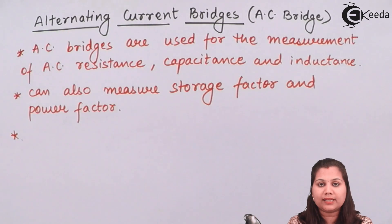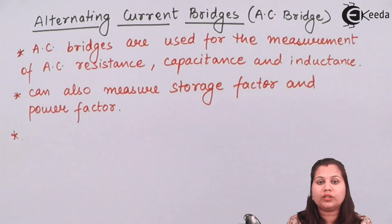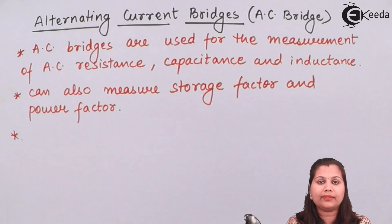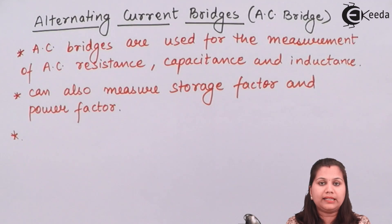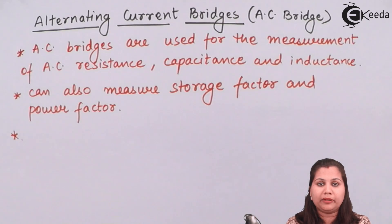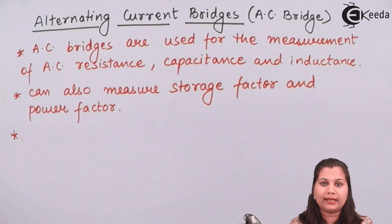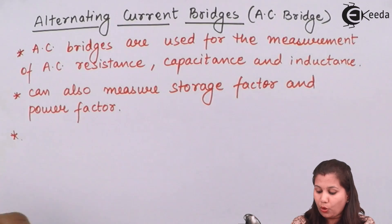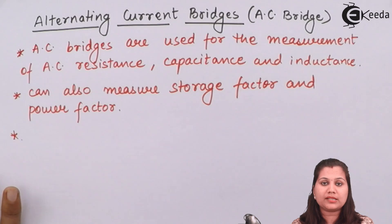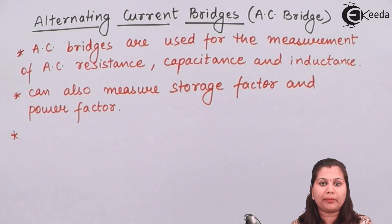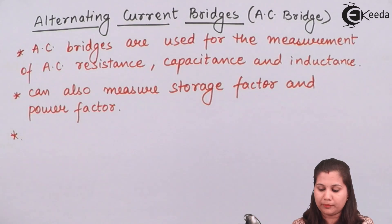Now, all the alternating current bridges are based on the Wheatstone bridge. The Wheatstone bridge is the most simple and basic bridge network. It is a DC bridge in which we use a battery as the EMF, or power supply, in the bridge network. So all the alternating current bridges, in their construction, are based on the Wheatstone bridge.